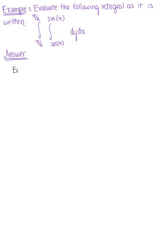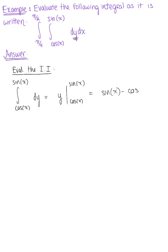So the first thing that we want to do is evaluate the inner integral. Looking at this given double integral, we see we're integrating with respect to y. The integral of dy from cosine of x to sine of x integrates to y, and we are ready to evaluate from cosine to sine. So this leaves us with sine of x minus cosine of x.